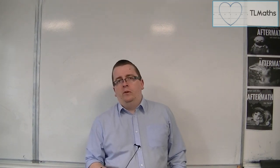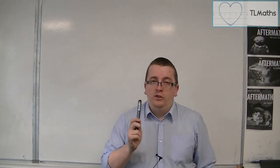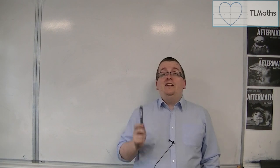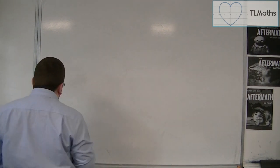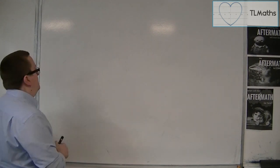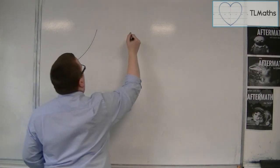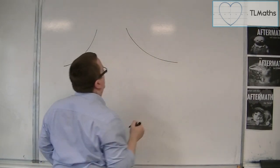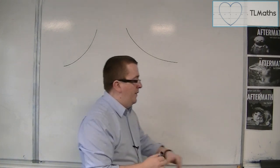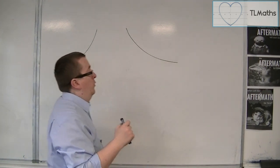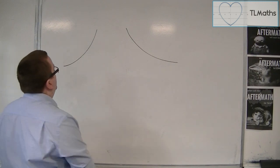And for the trapezium rule, we can tell whether it's going to be an overestimate or an underestimate based on the curve. Now, if the shape of the curve that we're looking at looks either like this or like this, then we can safely say that the curve is, or rather the area that we get, will be an overestimate.